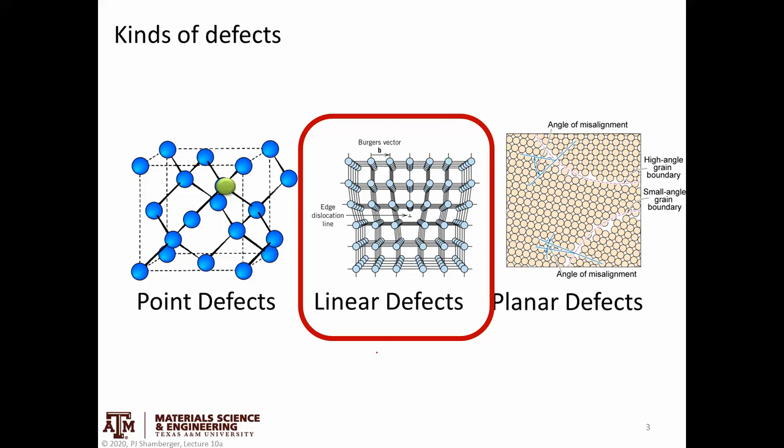Real materials are flawed things, just like you and me, and these imperfections control a lot of their properties. We talked previously about point defects — things like vacancies and interstitials — and now we're talking about linear defects. It's important to remember that the defect itself is an extended one-dimensional line. It could curve or point in different directions, but it's a line. When we talk about dislocations and disclinations, make sure you're visualizing them as a line.